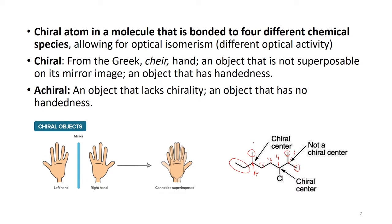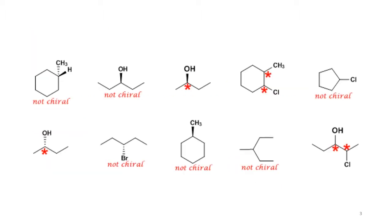Achiral would be opposite to chiral, which means it will have no optical activity. If I look at these examples, here I have a chiral compound because I don't have any chiral atoms.